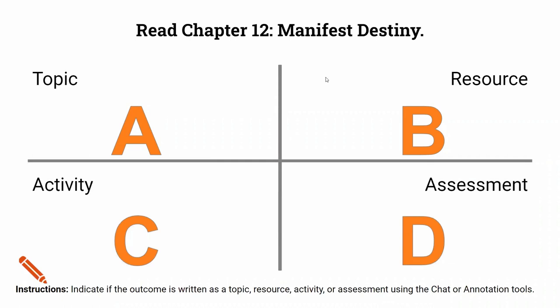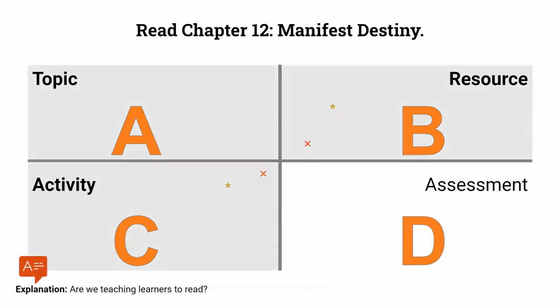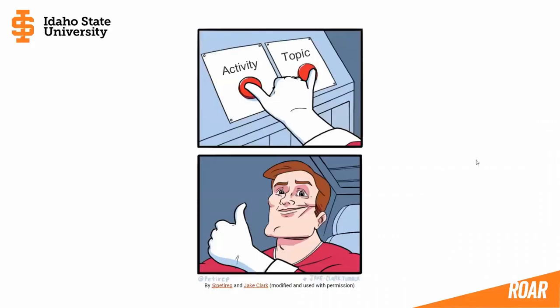One more: 'Read Chapter 12, Manifest Destiny.' Resource and activity coming up in the chat. This is written less as a measurable outcome and more as a thing to do. Manifest Destiny is a topic, the textbook Chapter 12 is a resource, and reading is an activity. So what do we want students to demonstrate? Are they going to be able to explain the beliefs that grounded Manifest Destiny, or paraphrase events that occurred as a result? It fits in multiple boxes — and sometimes these outcomes can fit into more than one fake box, but the awareness can help you write more measurable learning outcomes.